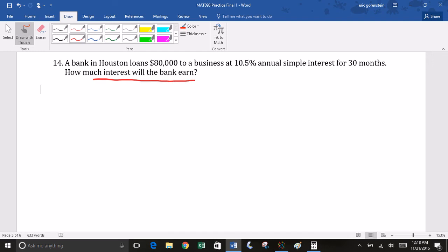Okay, so remember, interest is a fee charged for borrowing money. So what's the fee for borrowing this $80,000 for 30 months? It's usually stated as a percentage. So how many dollars does that translate to?